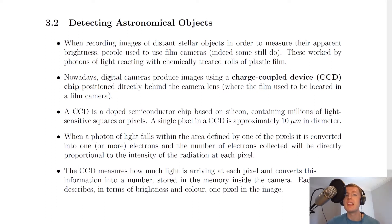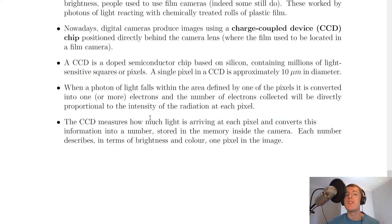Nowadays, however, digital cameras produce images using a charge-coupled device, also known as a CCD, and this is a chip positioned directly behind the camera lens.